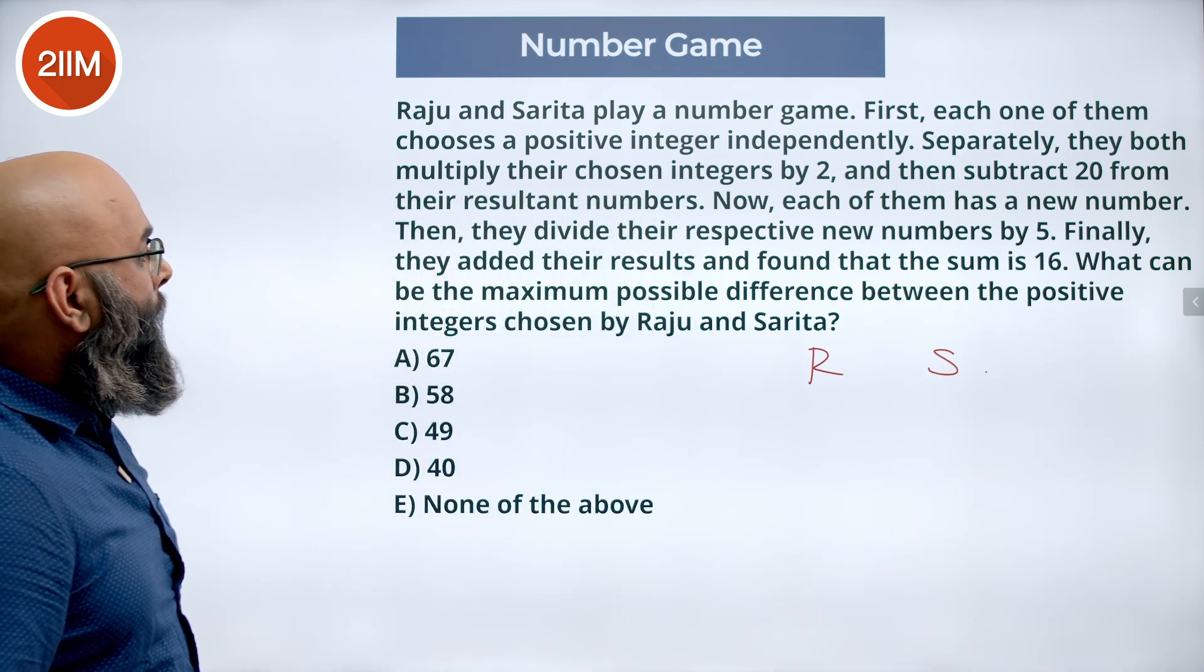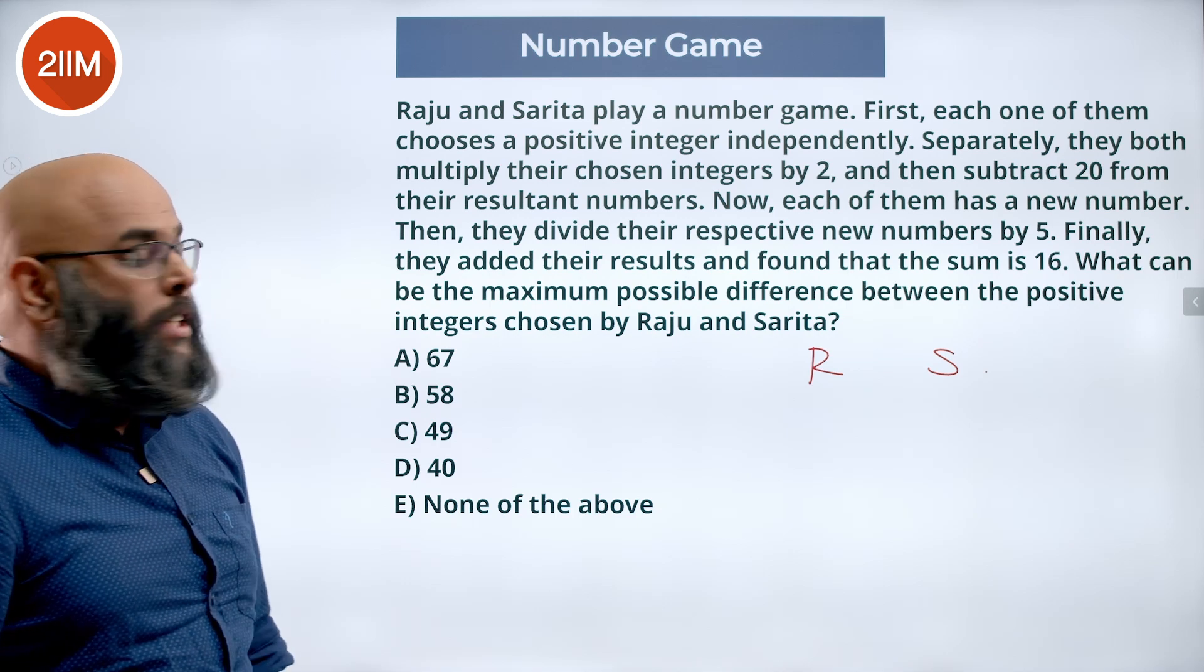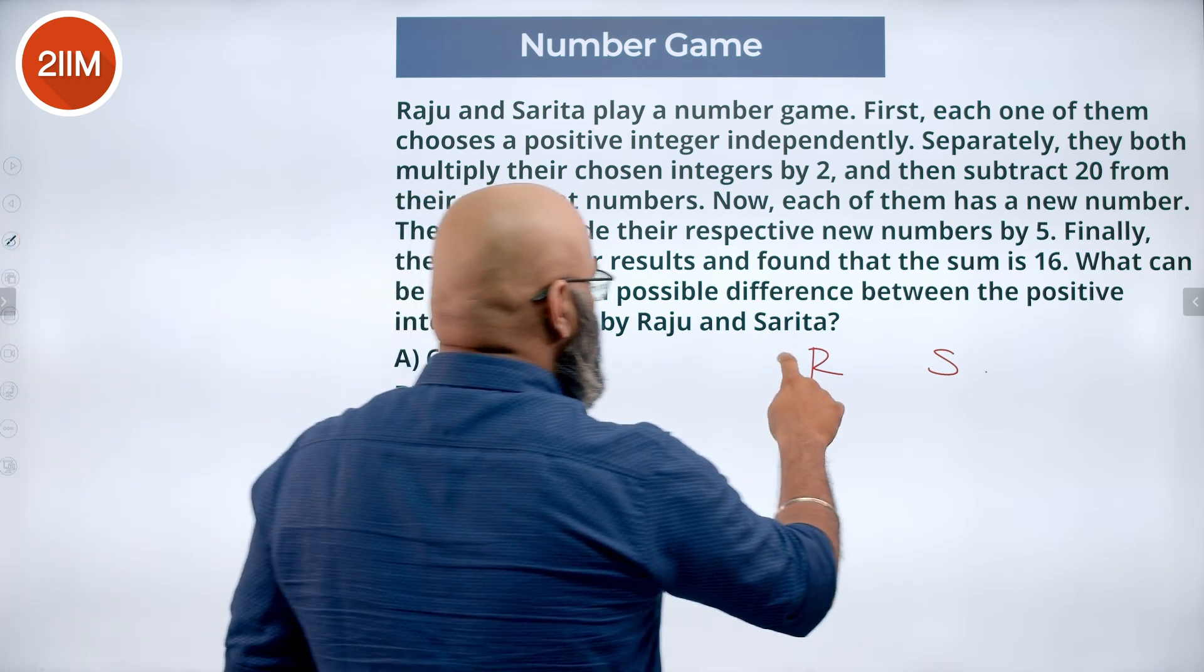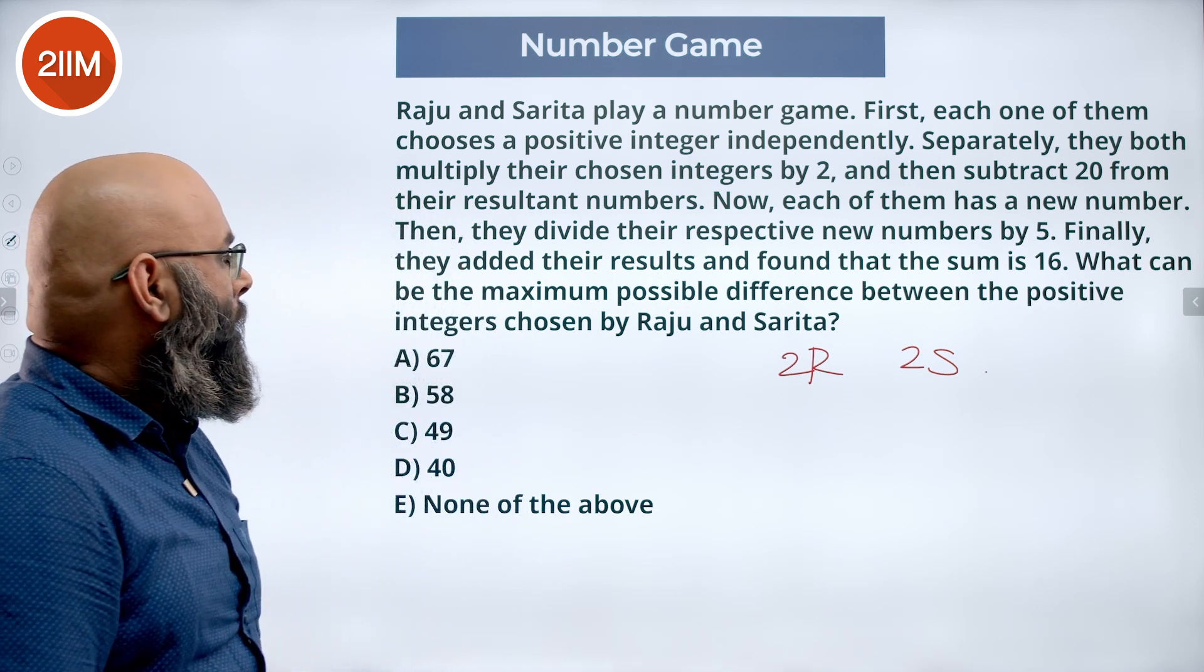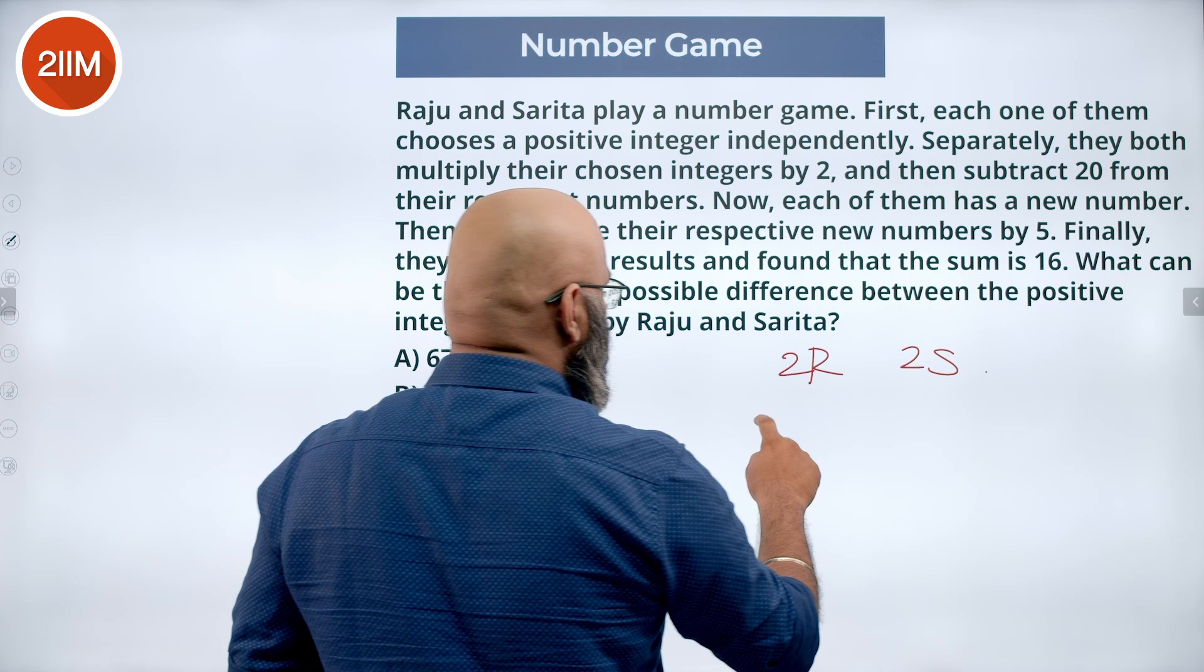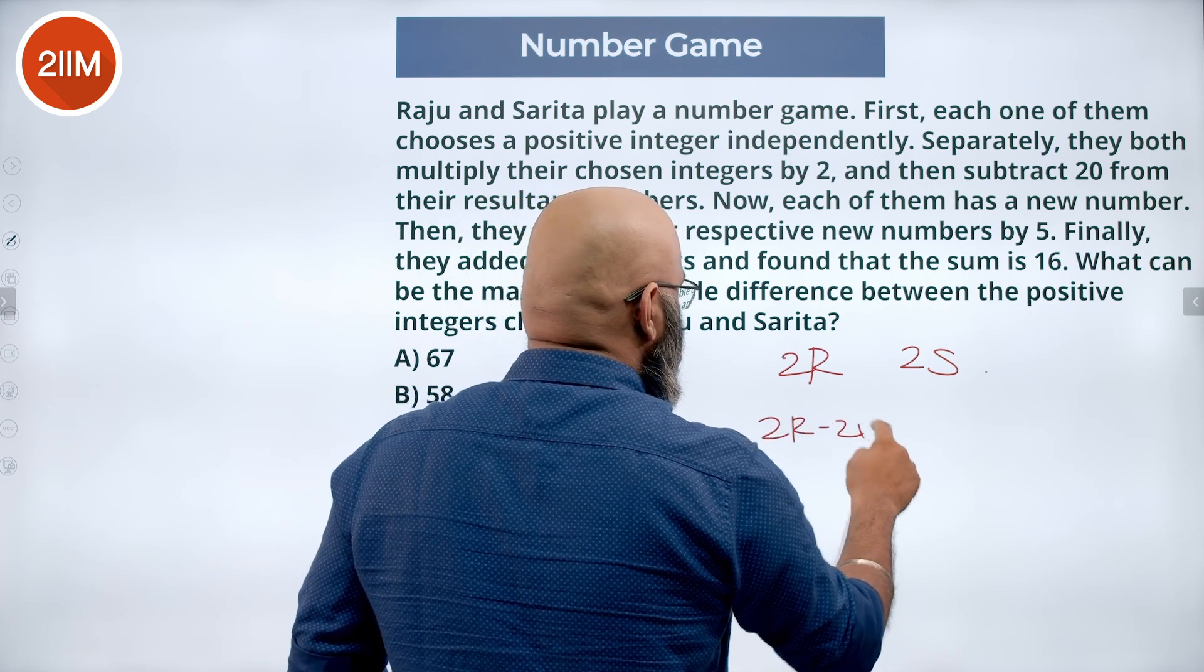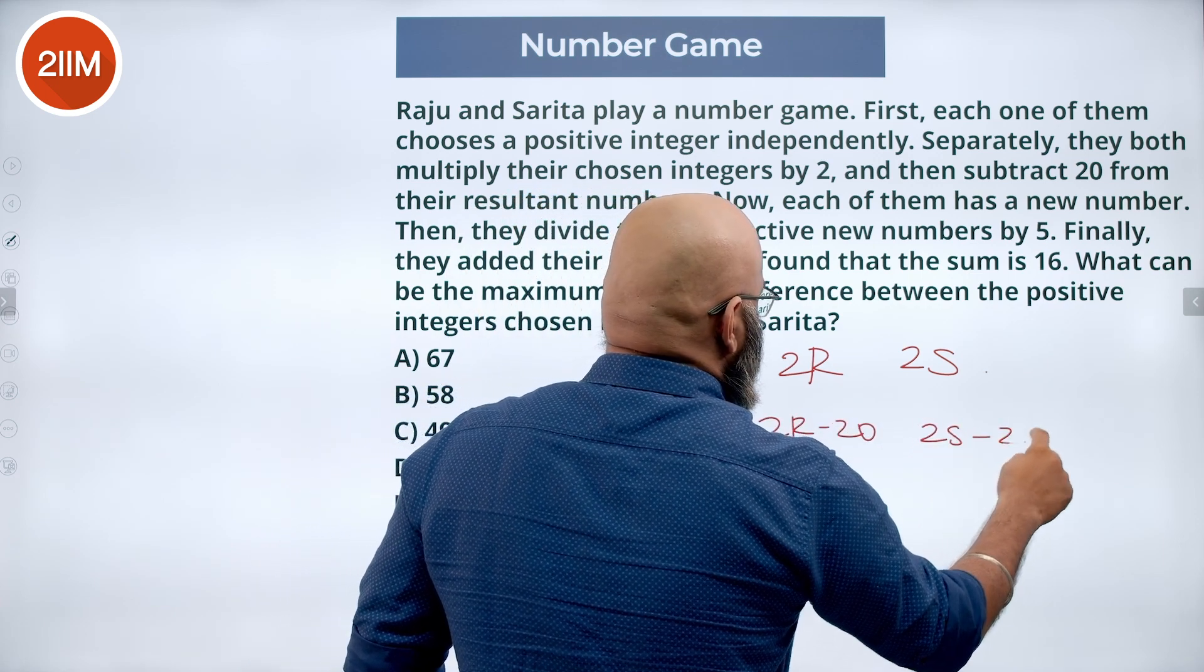They both separately multiply their chosen integers by 2. So that means it becomes 2R and 2S. And then subtract 20 from their resultant numbers. So that means here they have 2R minus 20, 2S minus 20.